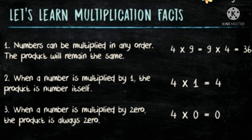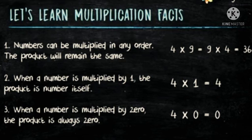Let's learn some facts about multiplication. First, numbers can be multiplied in any order and the product will remain the same. That is, 4 multiplied by 9, or 9 multiplied by 4 — in both cases the product is 36.